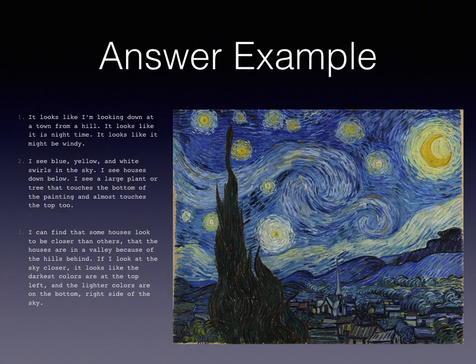Answer example. One: it looks like I'm looking down at a town from a hill. It looks like it is nighttime. It also looks like it might be windy. Number two: I see blue, yellow, and white swirls in the sky. I see houses down below. I see a large plant or tree that touches the bottom of the painting and almost touches the top too.